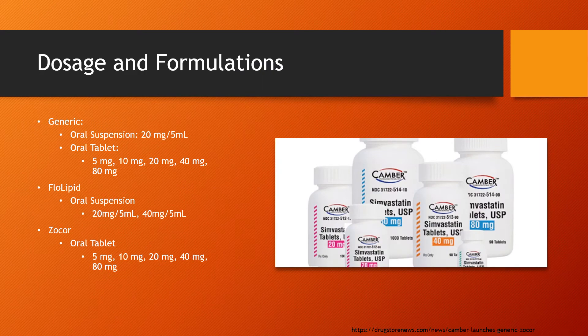Here are the various forms that Simvastatin comes in. It comes in a generic suspension and tablet. The suspension comes in a concentration of 20 mg per 5 mL, and in tablet form: 5, 10, 20, 40, and 80 mg. It also comes in a brand-named Flolipid oral suspension, which comes in concentrations of 20 mg per 5 mL and 40 mg per 5 mL.